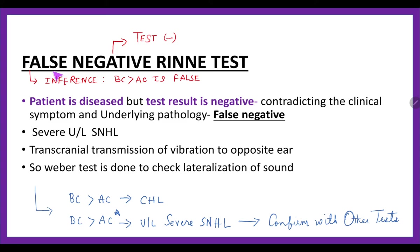If a component of false negative Rinne test comes, what does that mean? The Rinne test is negative, but the inference we get—that bone conduction is greater or better than air conduction—the inference is false. So false negative indicates the inference we get from the negative Rinne test is false. We usually infer bone conduction better than air conduction means conductive hearing loss, but here there could be unilateral severe sensorineural hearing loss. This can be possible by transcranial transmission of vibration to the opposite ear. This can be further evaluated through other tuning fork tests and audiometry tests. False negative Rinne test is associated with severe unilateral sensorineural hearing loss.